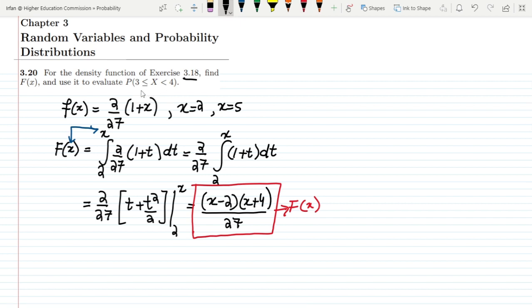So now in order to find the second part which is finding the probability that x is greater or equal to 3 and less than 4, what I have to do is I have to include these two ranges in such a way that I have to subtract the lower range CDF from the higher range. So I have to write here capital F of 4 and from it I have to subtract capital F of 3.